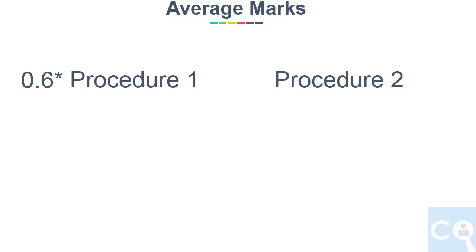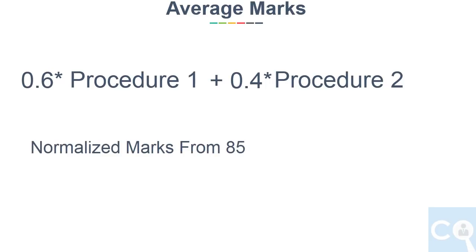Now take the average marks from the first and second procedures and apply a weightage of 60% for the first procedure and 40% for the second, as we trust the first procedure more. This gives us normalized marks for each topic from 85 marks.